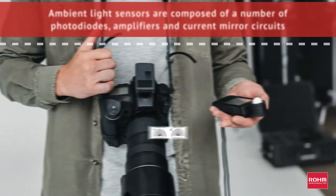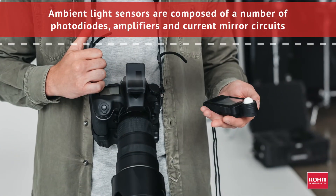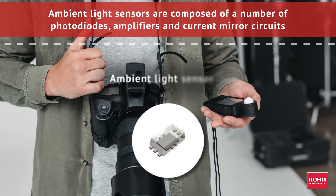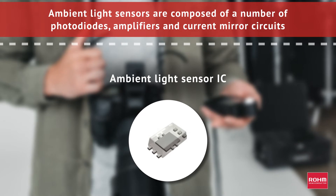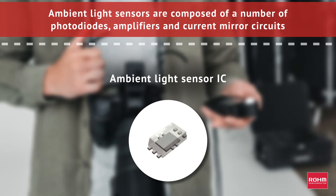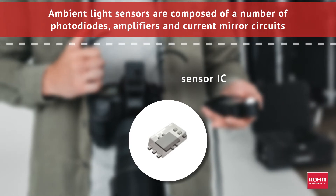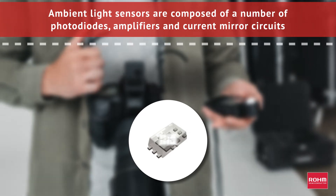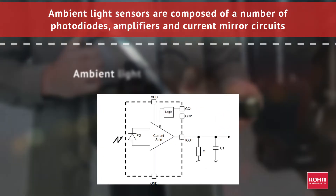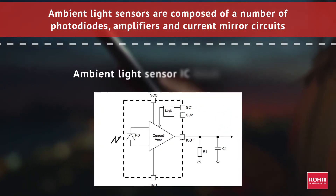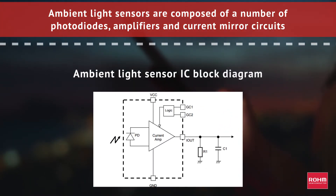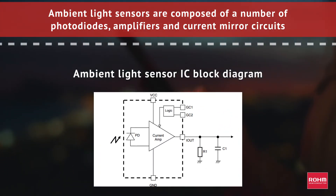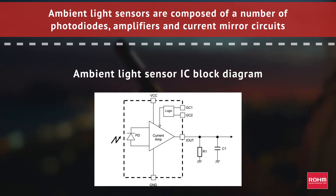Ambient light sensor ICs are composed of a number of photo diodes, amplifiers, and current mirror circuits. This allows the sensors to obtain ambient light data for adjusting LCD and keypad backlight for mobile phones to deliver both increased power savings and better visibility.